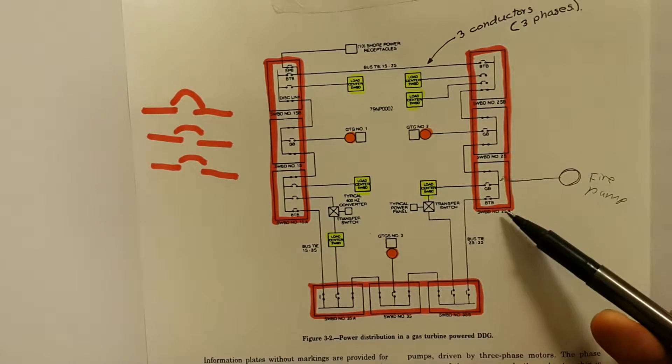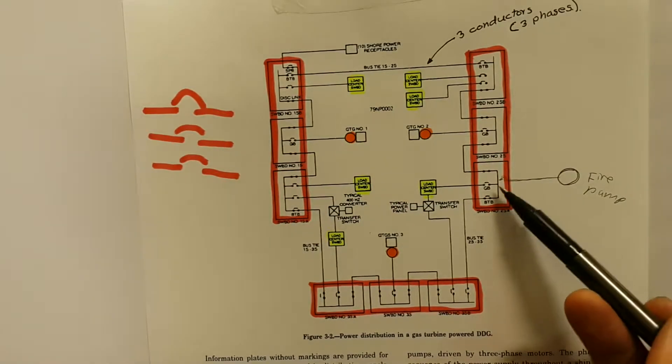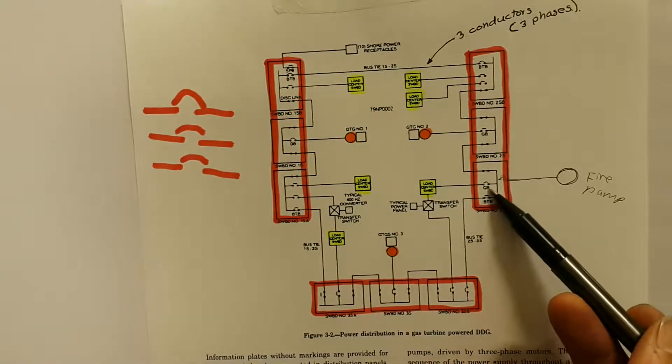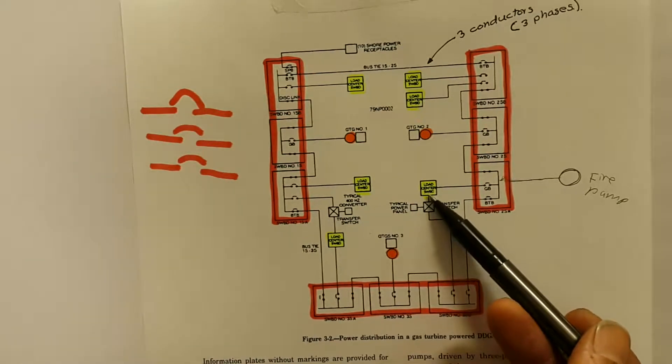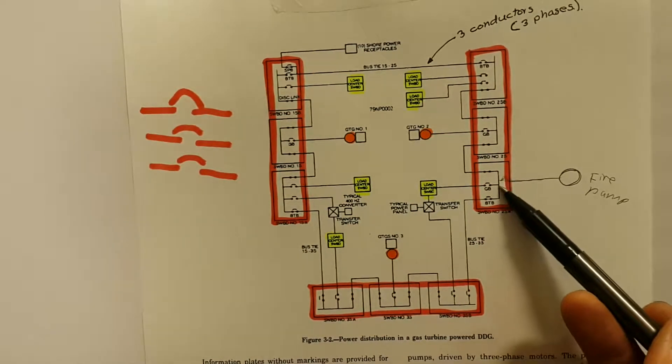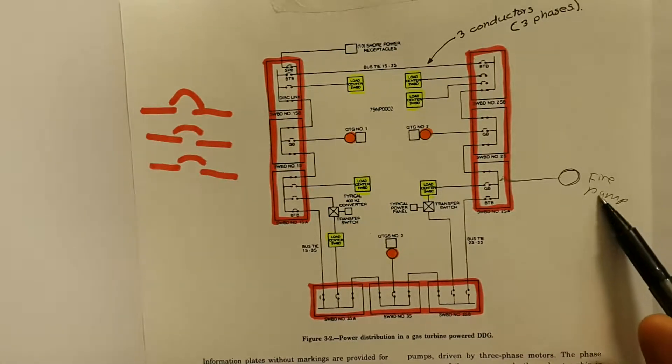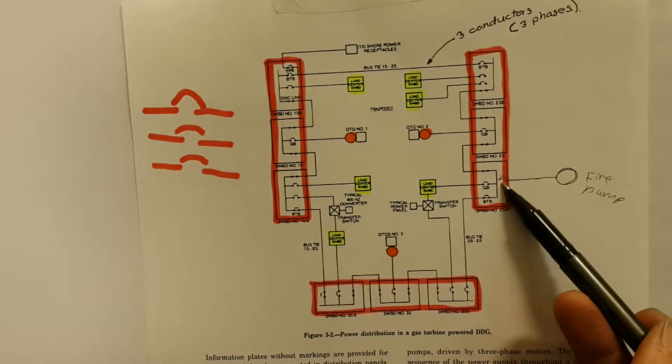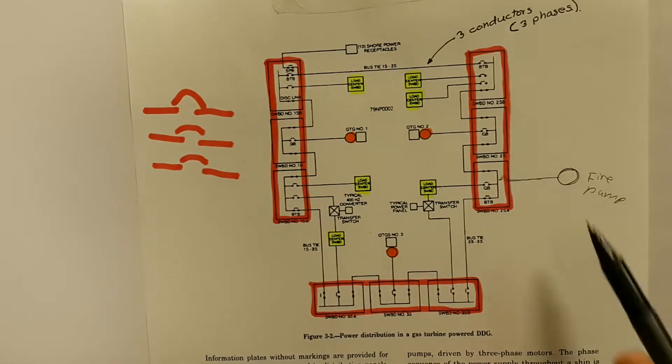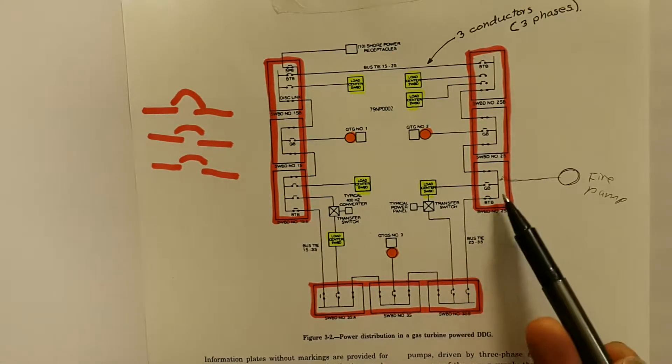Then once it is in the A section, power gets farther, sends another breaker to what is called a load center. There are some larger loads, like fire pumps for example, that have smaller breakers that feed directly the fire pump from the switchboard.